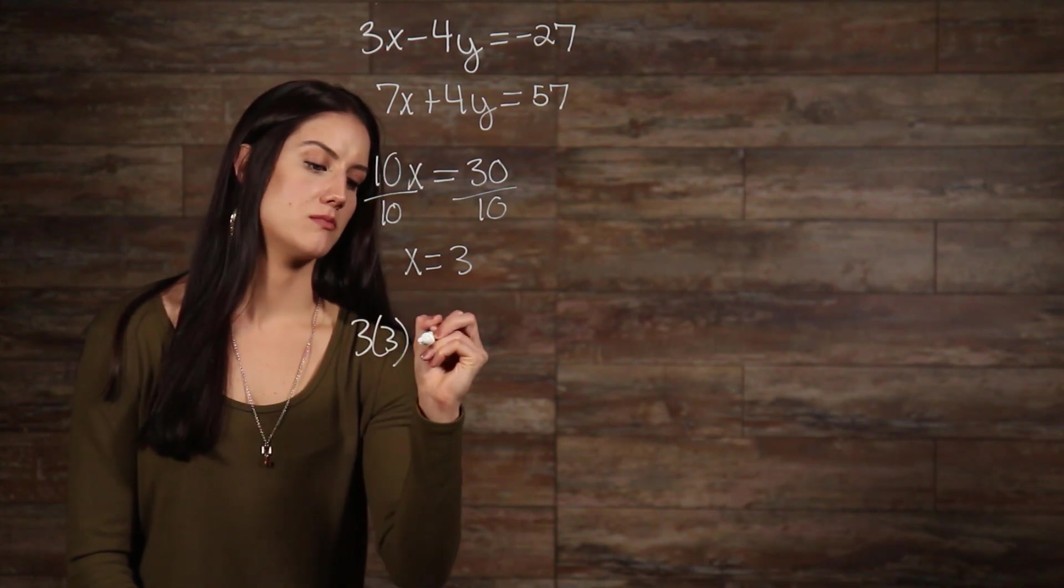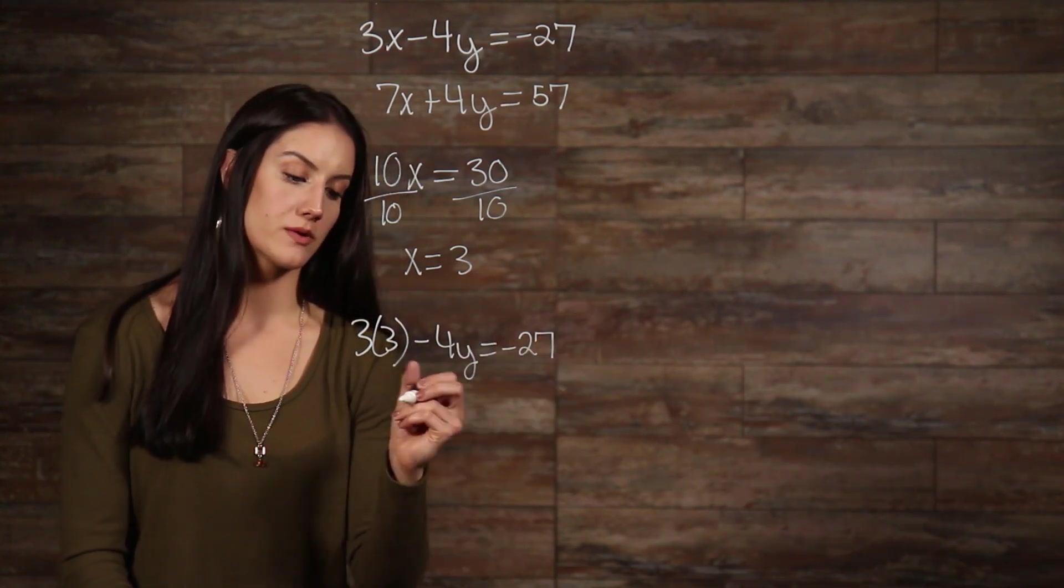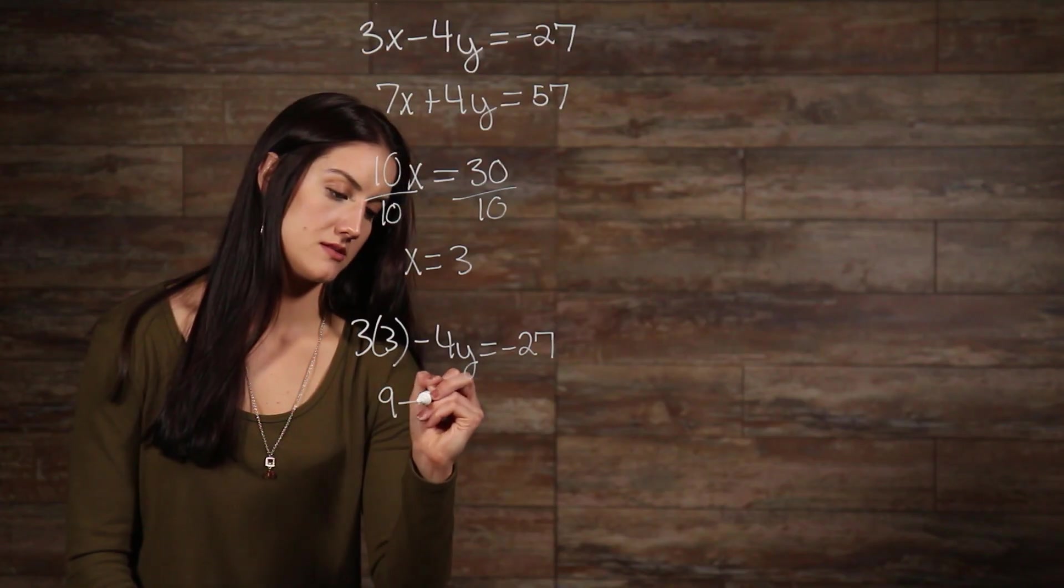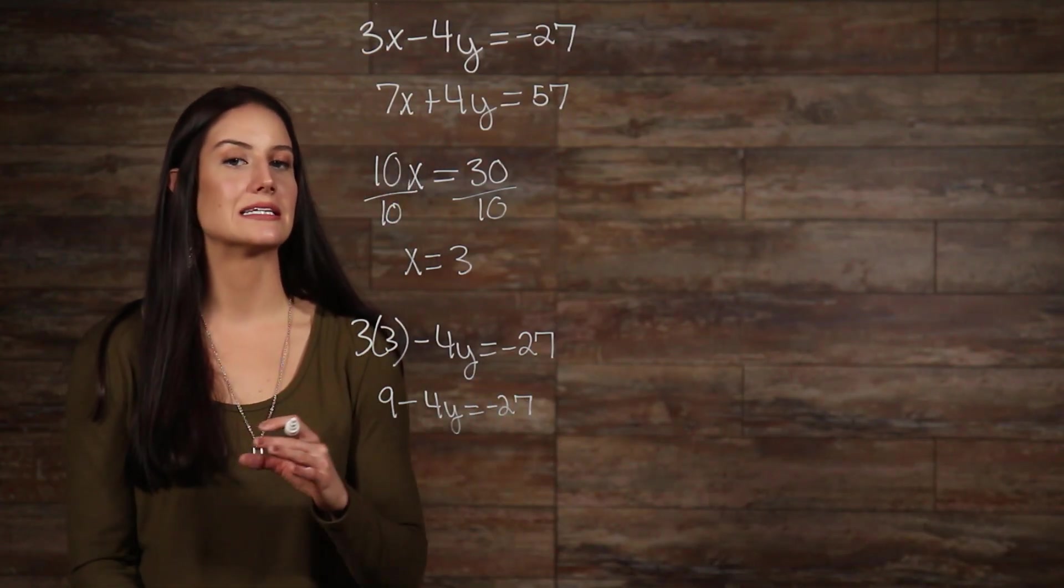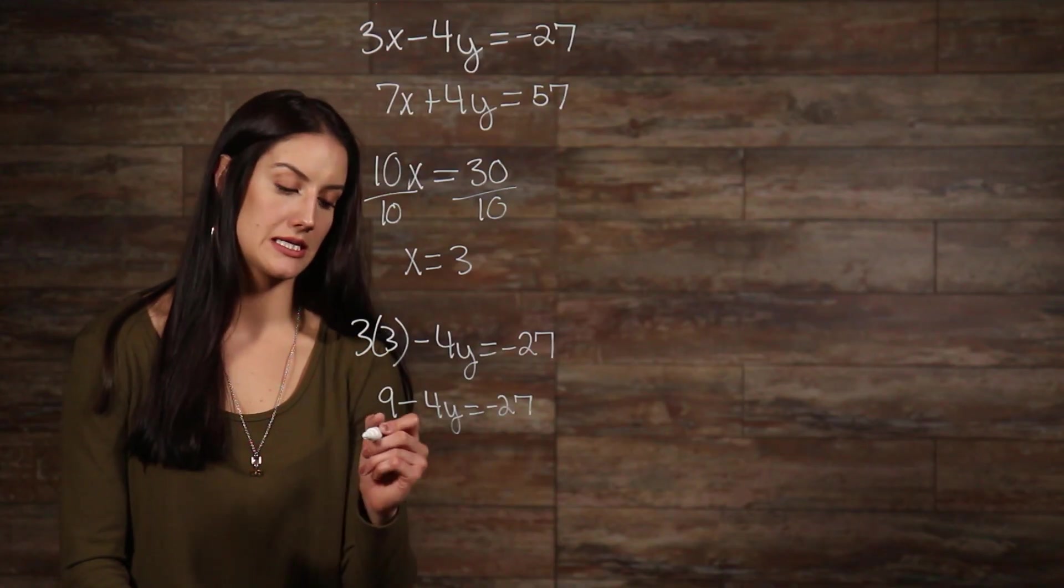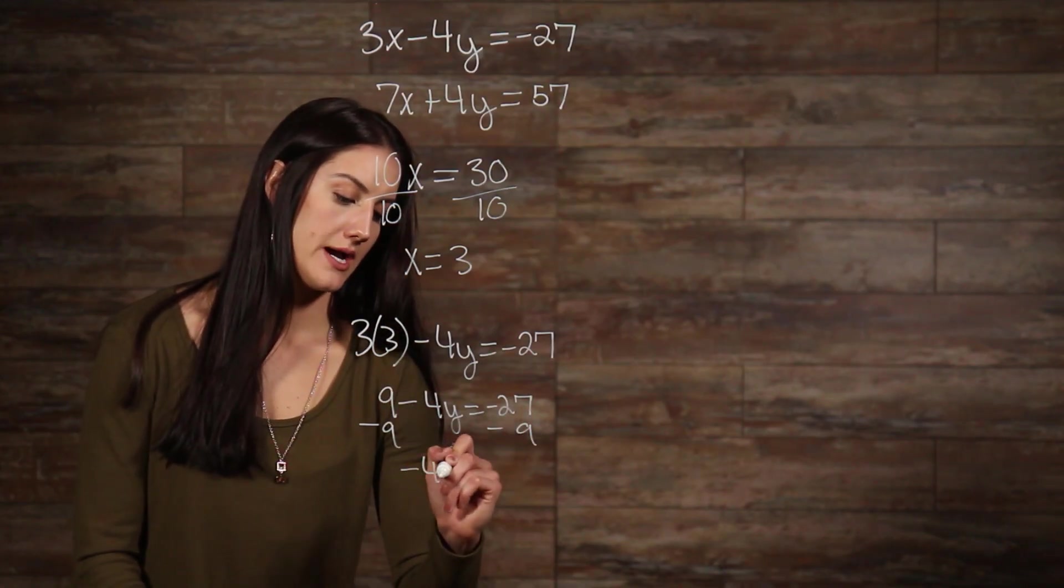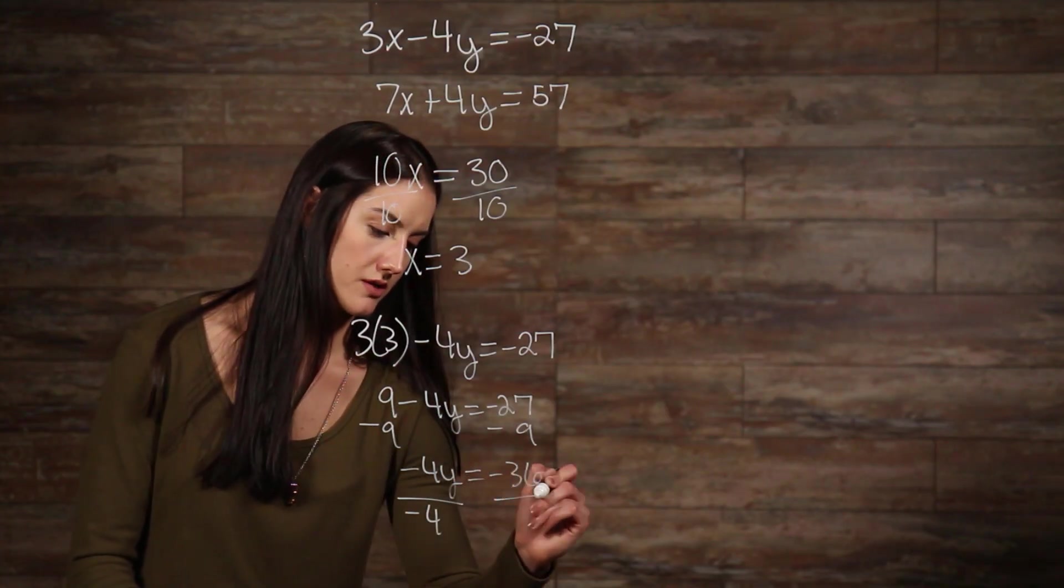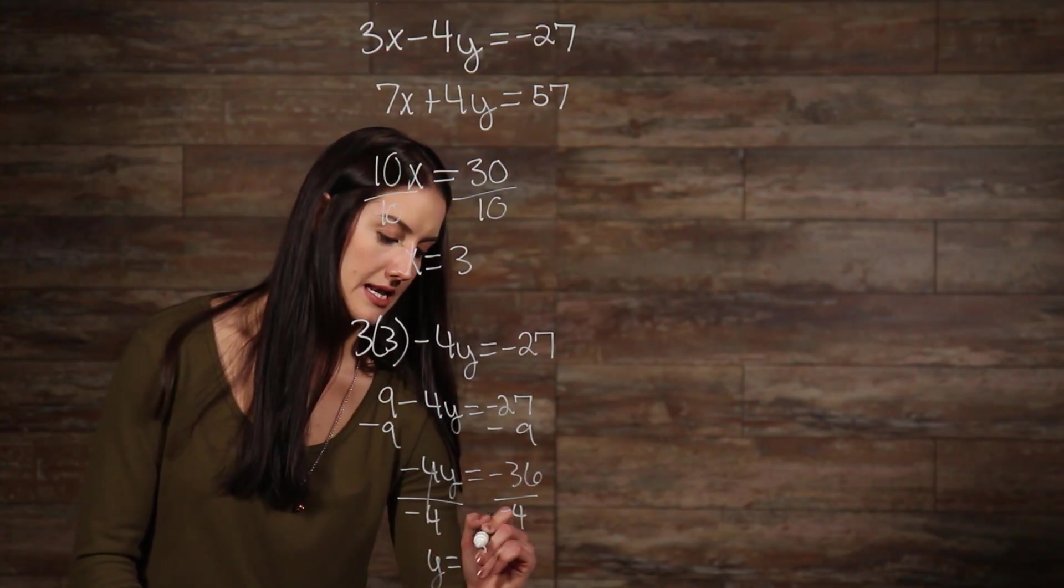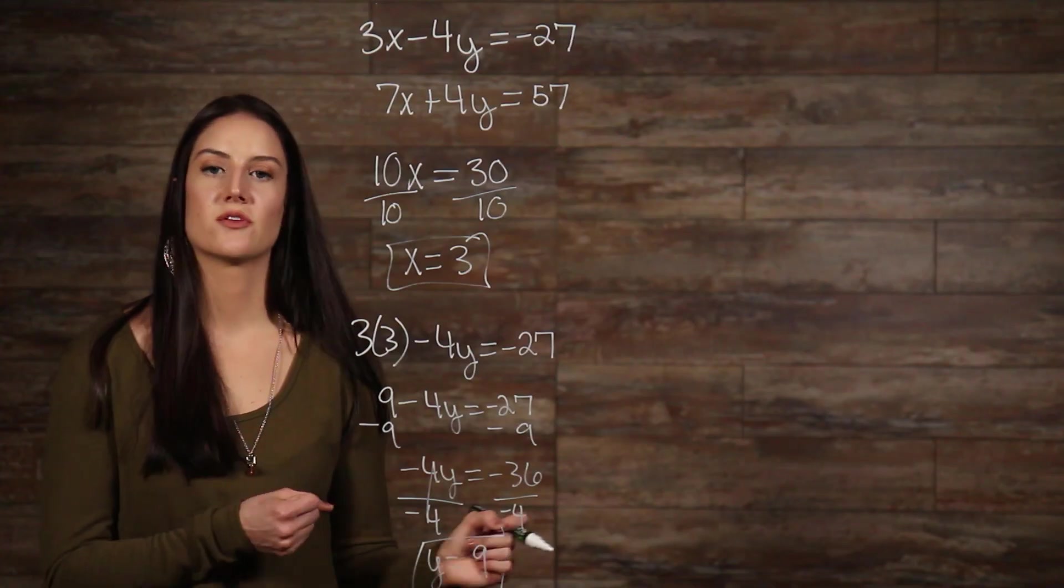So, and then I'll rewrite this as. Now, we need to move our 9 to the other side by subtracting 9. Then, we divide both sides by our negative 4 here. So now, we've solved and we've found both of our variables.